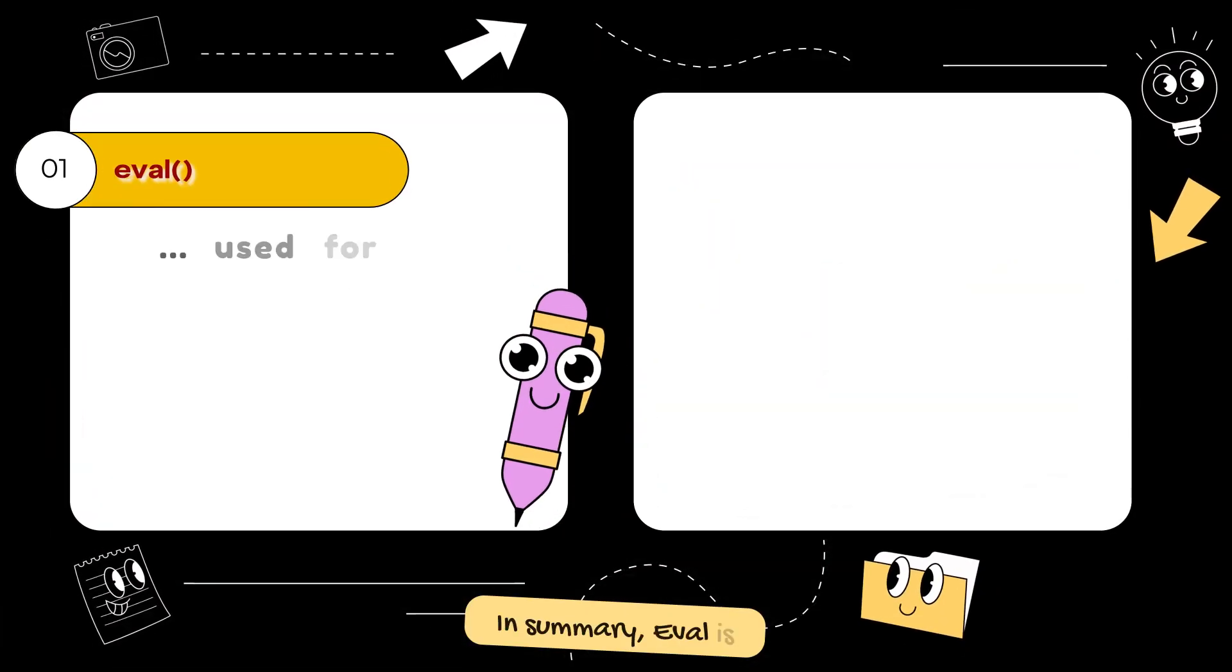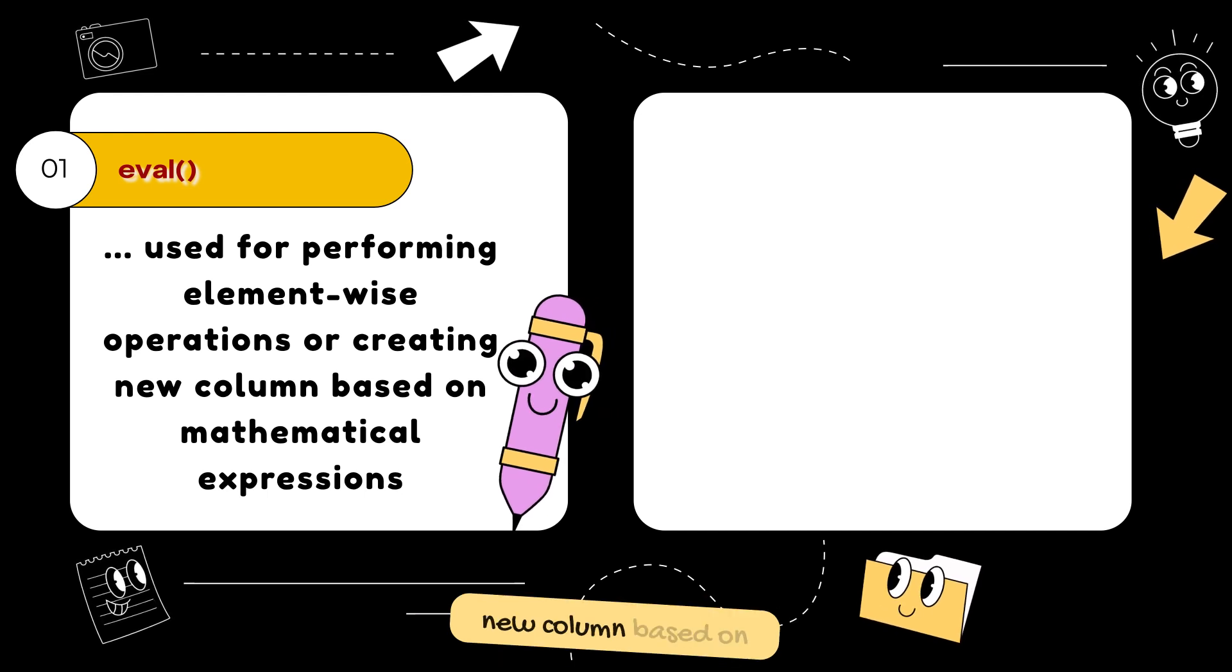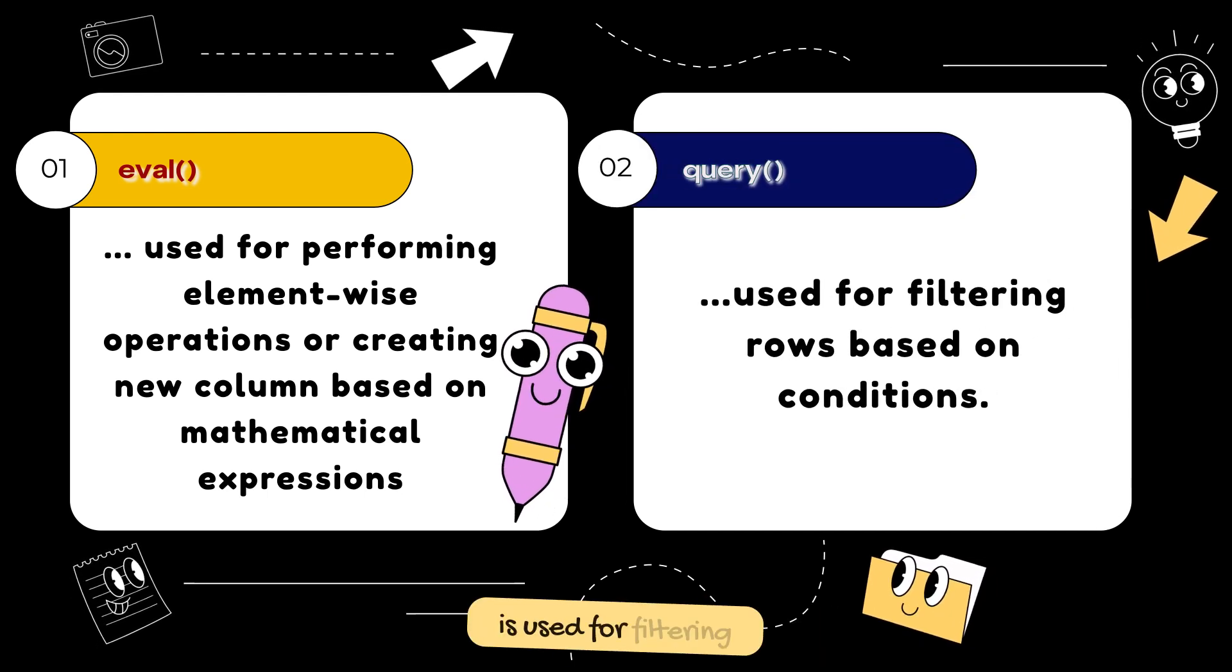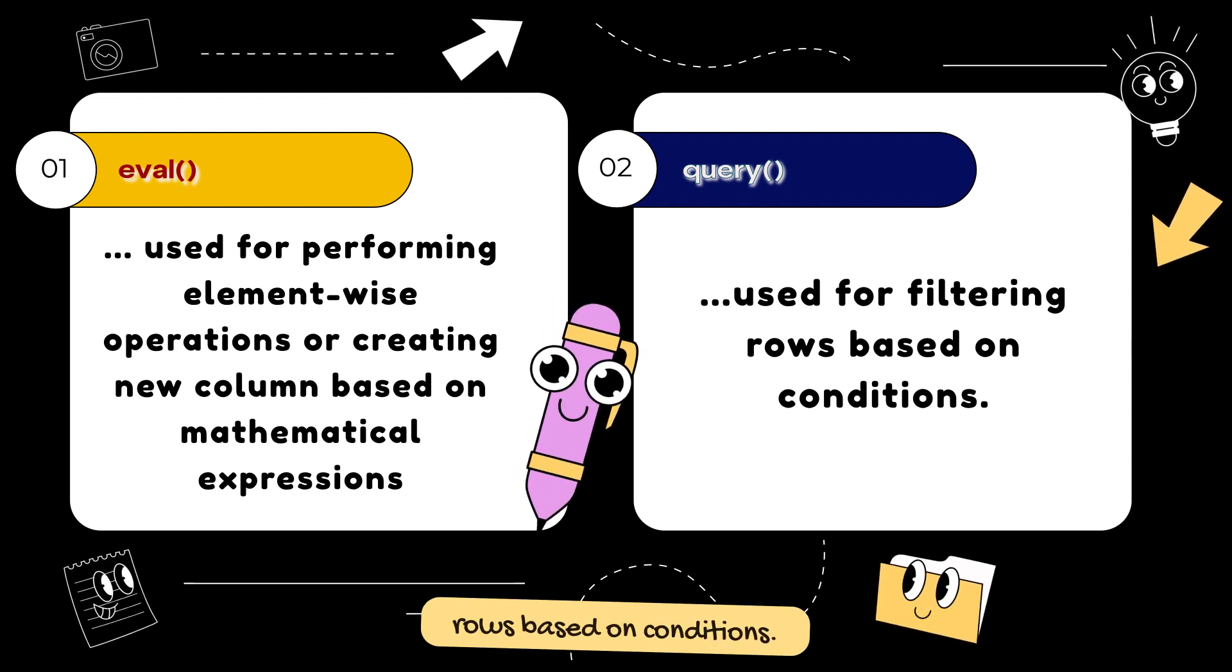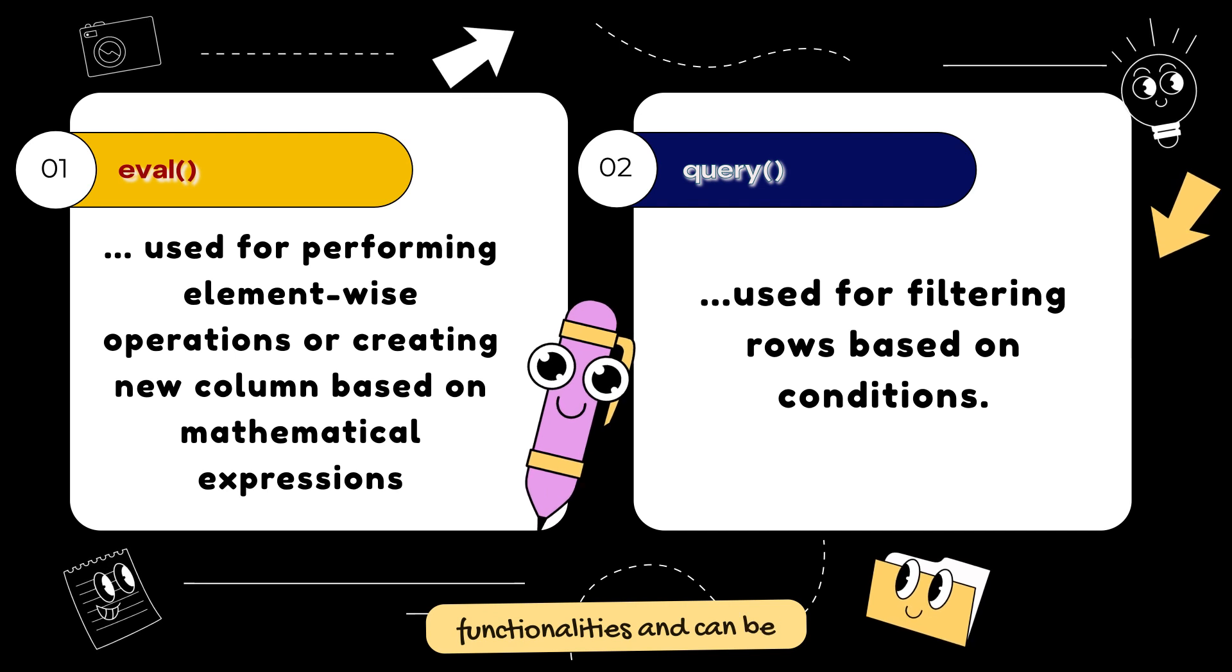In summary, eval is used for performing element-wise operations or creating new columns based on mathematical expressions, while query is used for filtering rows based on conditions. Both methods offer different functionalities and can be handy depending on the specific task that needs to be accomplished.